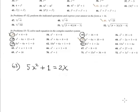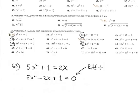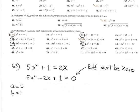Problem 63 again — a quadratic equation that is not already in standard form. Step number 1: write it in standard form. Remember, the right-hand side must be 0, and terms organized in descending order of degree. After rearranging: a = 5, b = -2, and c = 1.